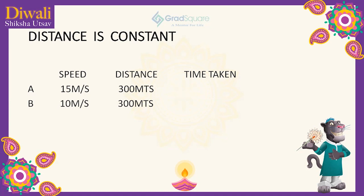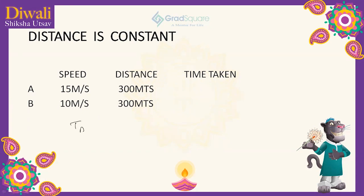...15 meters per second and 10 meters per second respectively. They are covering a distance of 300 meters. So the time taken by A is 300 divided by 15, which is 20 seconds. Similarly, the time taken by B is 300 divided by 10, which is 30 seconds.